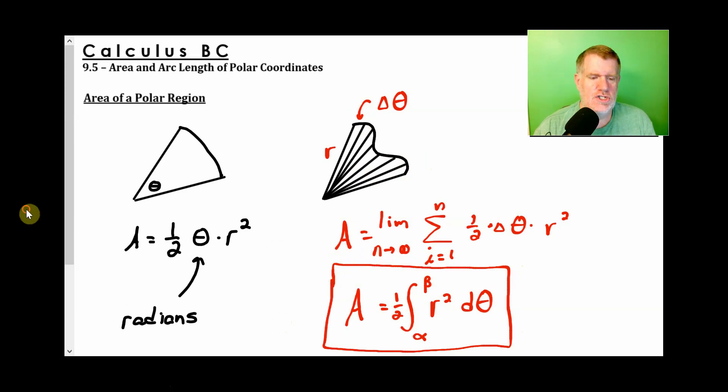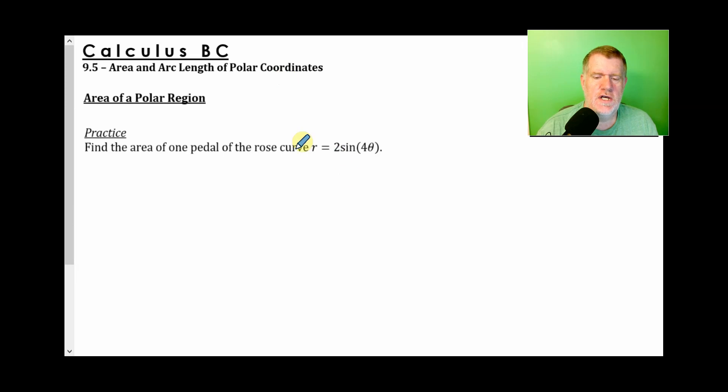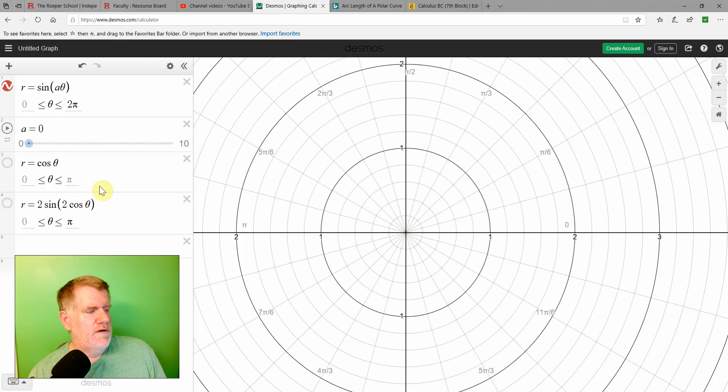Let's use that and figure out the area of this rose curve. Now I didn't really go over rose curves much in last lesson, so let me show you a little bit about what they are. Here is a graph r equals sine of a theta. When a is one, it's just a circle.